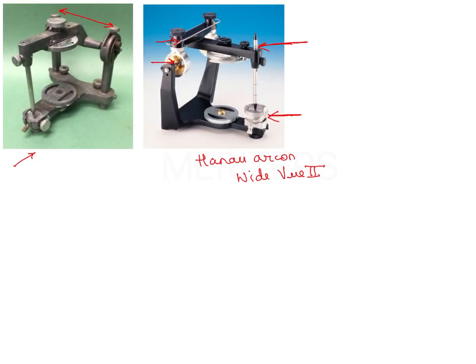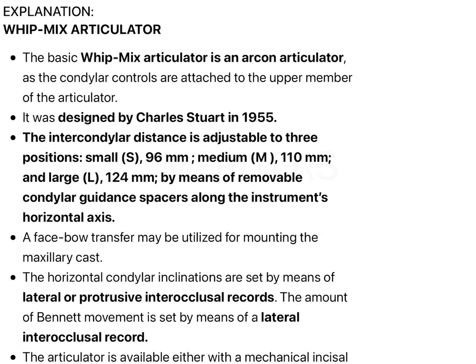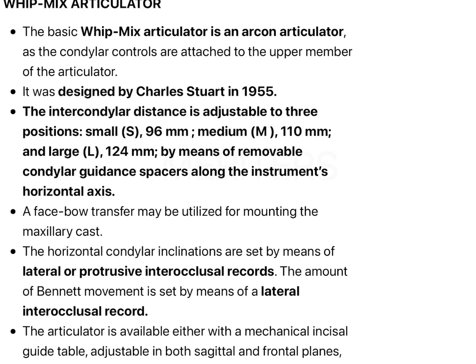Then we come to the Whip Mix Articulator. There is another variety of Hanau H2 Archon where the intercondylar distance is fixed, but the Whip Mix Articulator has a slot which allows you to move the assembly in three different positions. It is an Archon type articulator designed by Charles Stewart, with three adjustable degrees — small, medium, and large — that is 96 mm, 110 mm, and 124 mm. These values have rarely been asked in exams, but it wouldn't harm you to remember them.